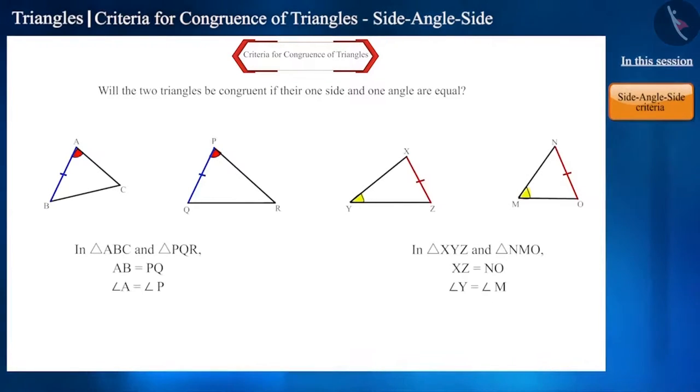Here, the triangles are not congruent by just having one equal side and one equal angle.